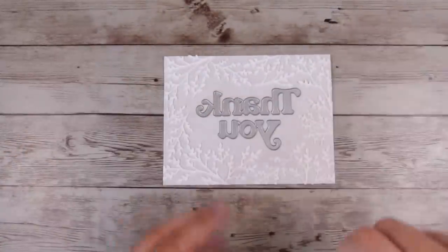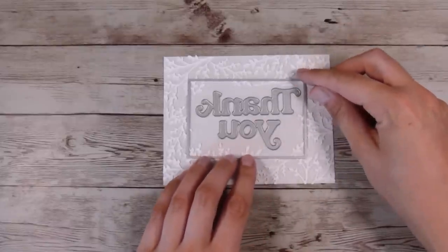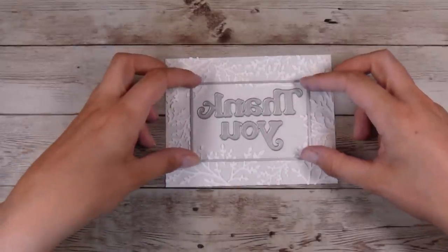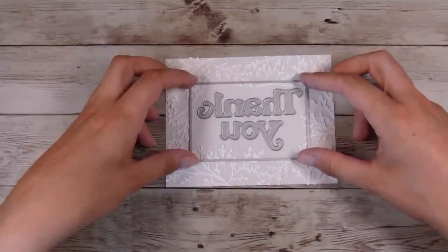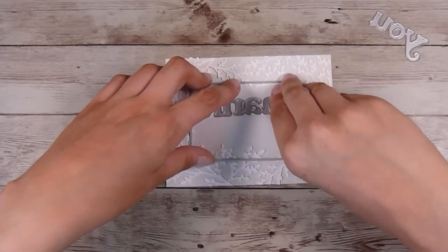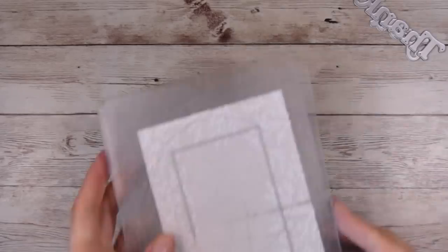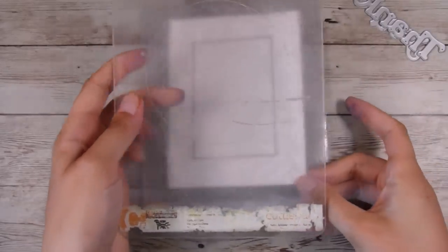I have used a smaller rectangle here from this Hero Arts Infinity Dies rectangle set. I've just made the rectangle big enough so it will fit around my sentiment perfectly. I'm going to place that down so that the cutting die is face down.